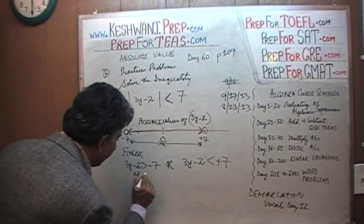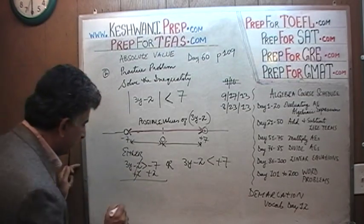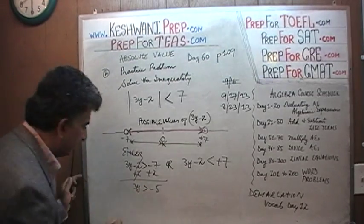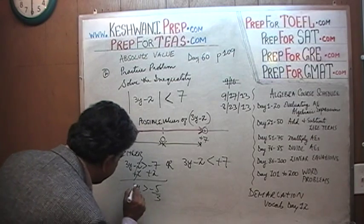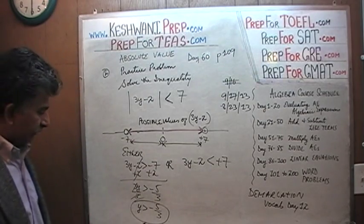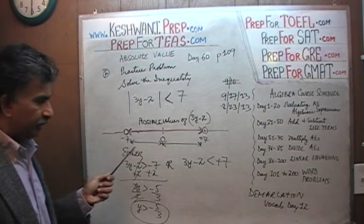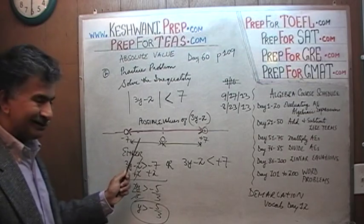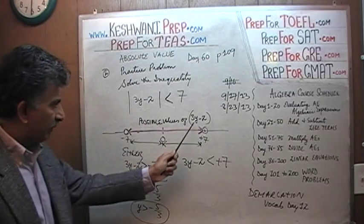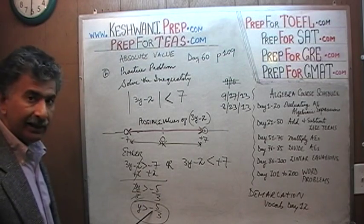Let's add 2 to both sides on the left inequality: 3y > −7 + 2, which gives us 3y > −5. Divide both sides by 3 — the 3 cancels out and y is greater than negative five-thirds. This shows the value of y. The number line we drew shows the possible values of 3y − 2, not y — so 3y − 2 can be anywhere from negative 7 to positive 7, meaning y must start at negative five-thirds.